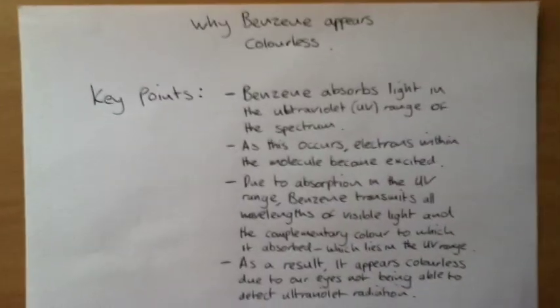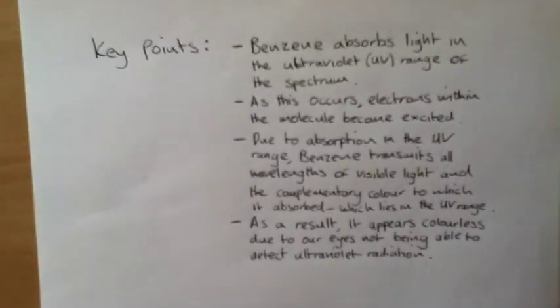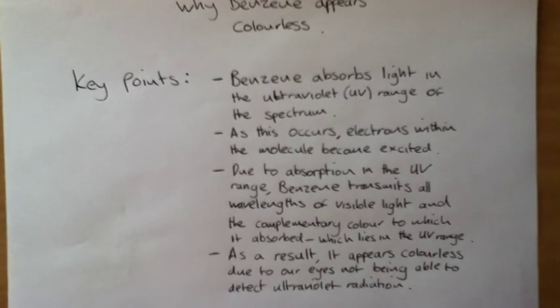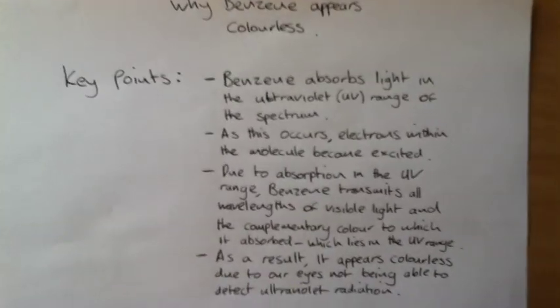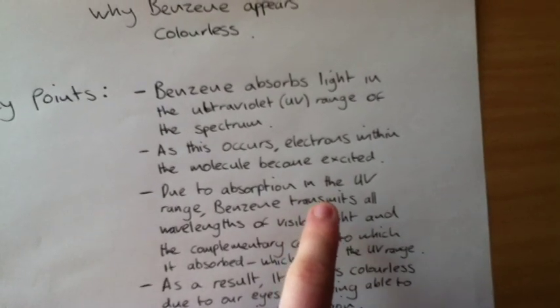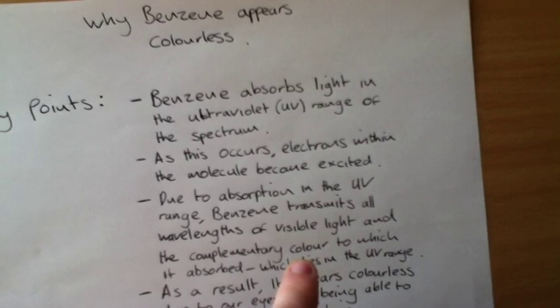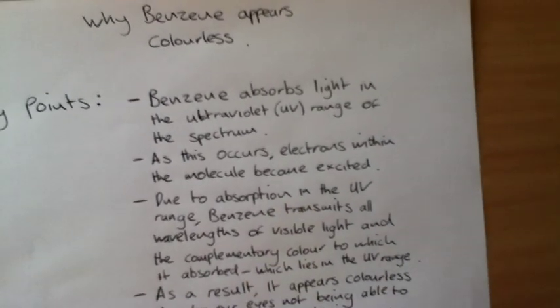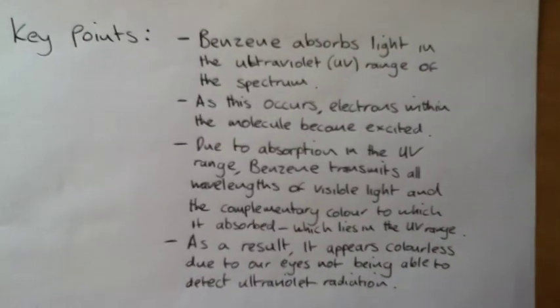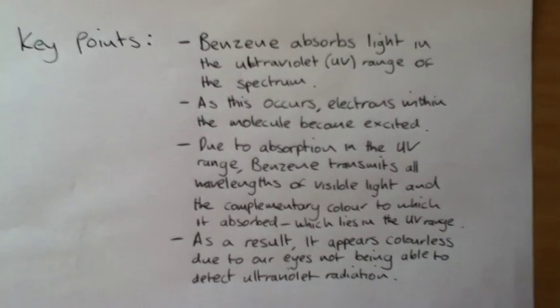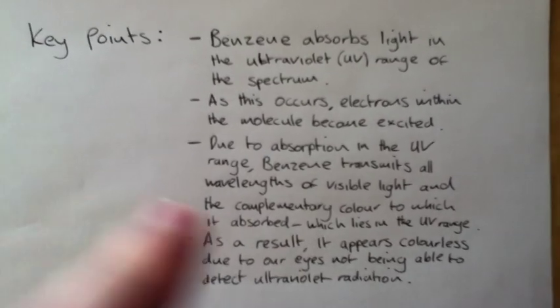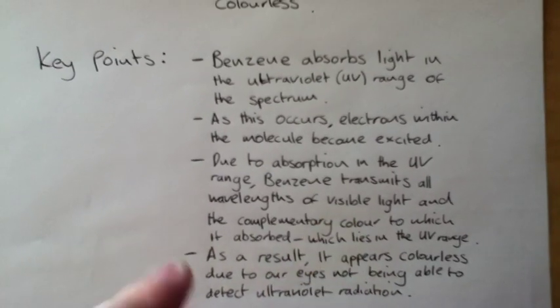Now, when a molecule absorbs UV light, electrons do become excited to a higher level. But the key thing which you have to remember is that the molecule then transmits wavelengths of light and UV. It does not emit like in physics where you have quantum theory. This is a key problem that students often put and you often lose all of the marks for putting emission on there. The important thing is it is transmission when it absorbs light.